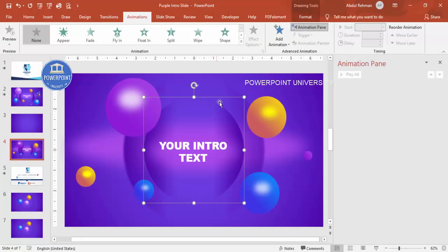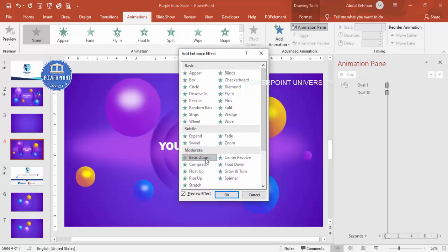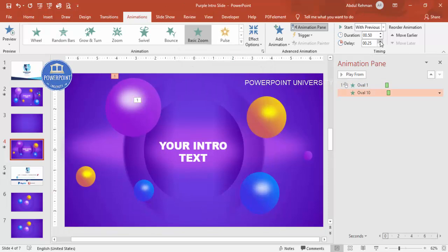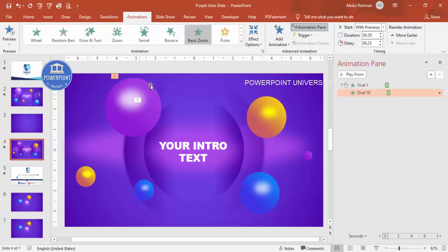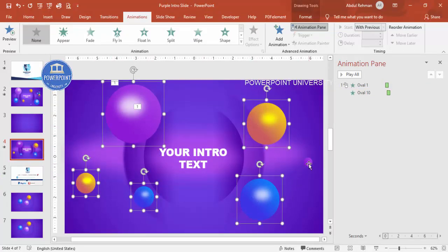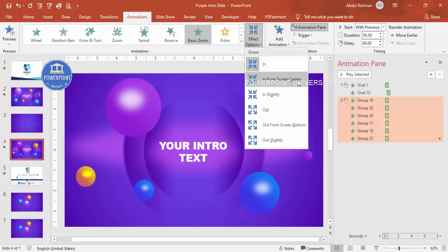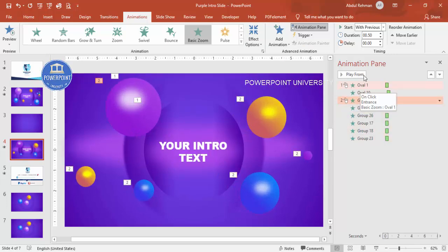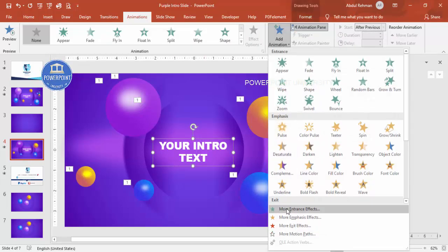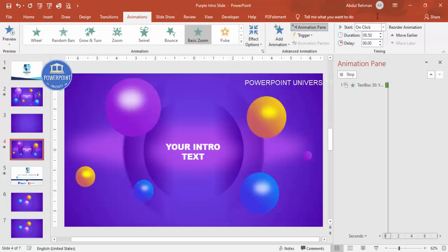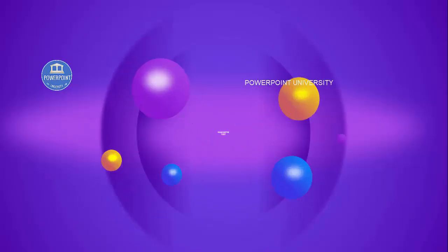Close Format Background and go to Animations, then enable the Animation Pane. Select the two oval shapes on the back side, then go to Add Animation, More Entrance Effects, and select Basic Zoom. Set a delay of about 0.5 seconds. For the other shapes, apply the same Basic Zoom effect — importantly, set it to zoom from Screen Center. Set timing to After Previous or With Previous.